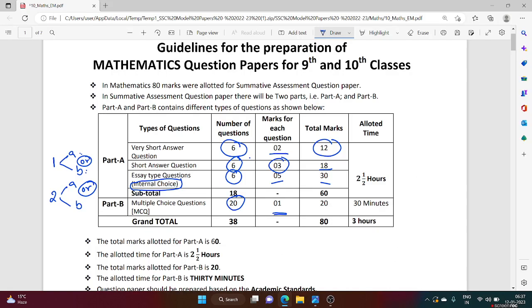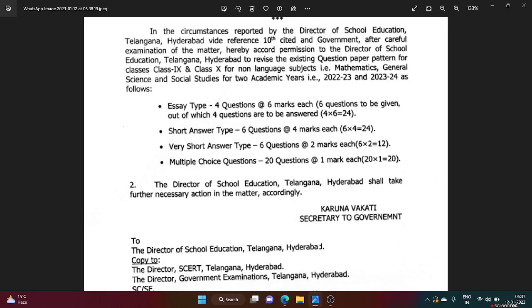Very short, six questions, two marks each, 12 marks. Here also six questions, two marks each, 12 marks. Multiple choice, 20 questions, each one mark, so total 20. Now have a look at the essay type questions.